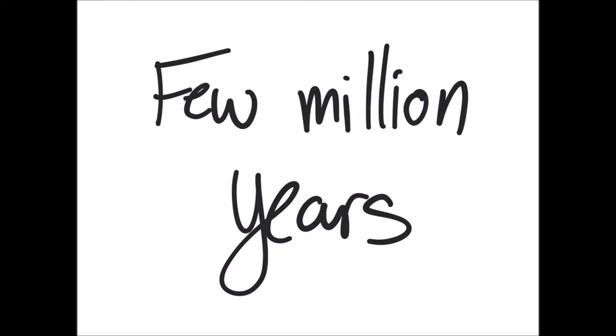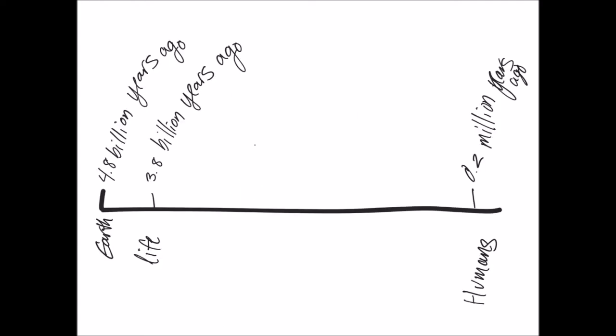Think about that for a minute — a few million years. Earth is 4.8 billion years old. Life arose on Earth 3.8 billion years ago — not humans, but bacteria and amoebas. Homo sapiens evolved about 0.2 million years ago. If our sun was a giant star, humans would never have come about. In fact, life on Earth would probably not have happened at all.